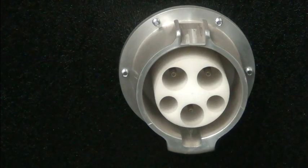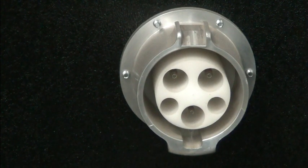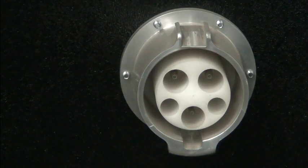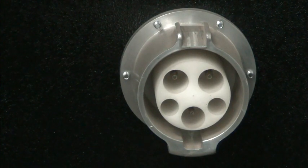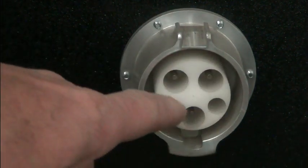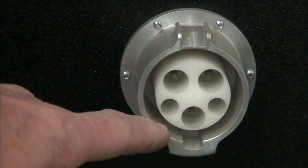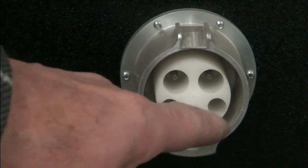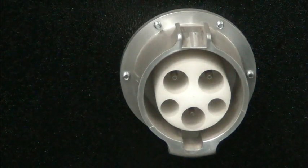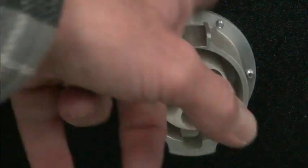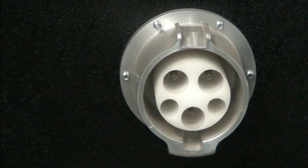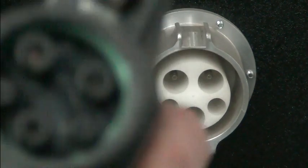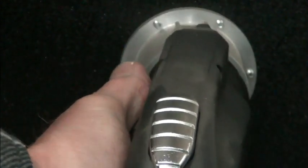So this is an example of a J1772. This is the plug configuration. We've got three larger pins, two on top and one on the bottom, and then two smaller pins. This is the top. This is where your connector here, your latch is on top. That's going to fit just like that.